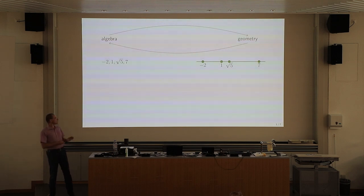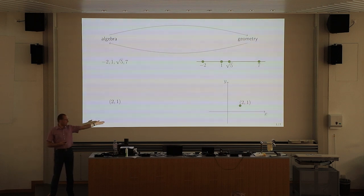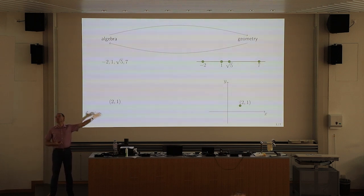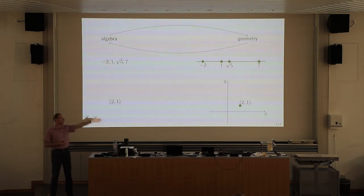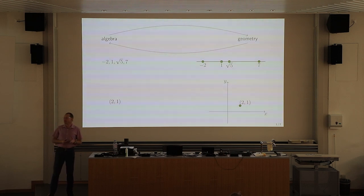We'll be going today back and forth between what you may call algebra and what you may call geometry. Numbers are just the names of the points — the labels of the points — and the points are the locations of the numbers. If you want to think of points in the plane, a point in the plane is described by two numbers. You give me a point, I can calculate the two coordinates. You give me two numbers, I can draw a point.